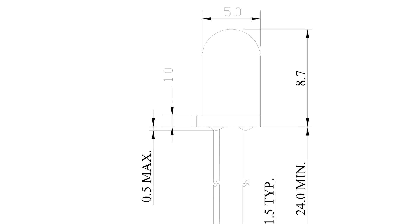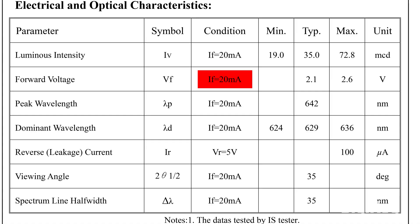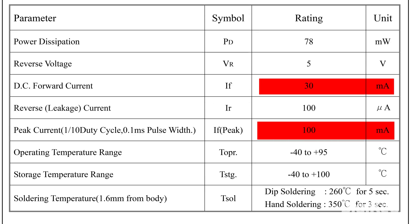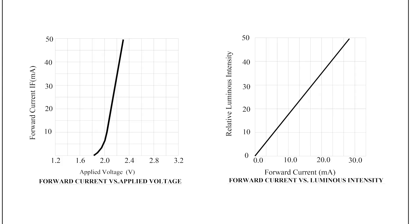Here's a data sheet for a standard 5mm red LED. Say I want to use this in a simple circuit with a battery and a resistor. I start by looking at the forward voltage, listed here as typically 2.1 volts, with a maximum of 2.6 volts at 20 milliamps. That's the voltage drop I'll use in my Ohm's Law calculation to size the current-limiting resistor. The recommended forward current is 20 milliamps, which will provide optimal brightness without pushing the LED too hard. The absolute maximum forward current is 30 milliamps, and the peak is even higher at 100 milliamps in pulsed mode, but we don't want to run that close to the edge. We can see that this LED's viewing angle is 35 degrees, which is fairly directional. I also love checking the graphs — this one shows how current increases steeply with voltage and how brightness scales with current. All this helps me design a circuit that's safe, efficient, and performs the way I expect.